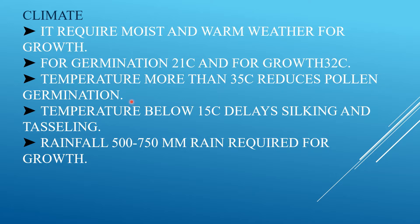High temperature reduces grain filling. Temperature below 15 degrees Celsius delays silking and tasseling. Tasseling is the male part of the maize plant, while silking receives pollen from the tassels for fertilization. Maize requires 500 to 750 mm of rainfall for its entire growth.